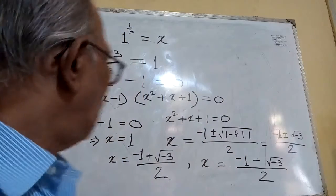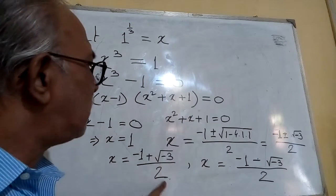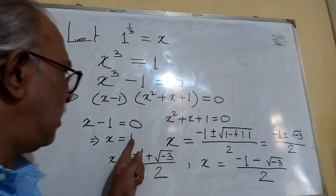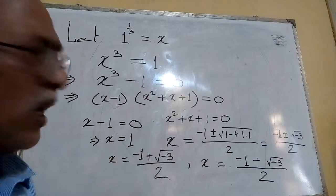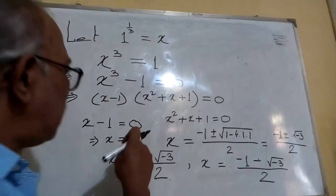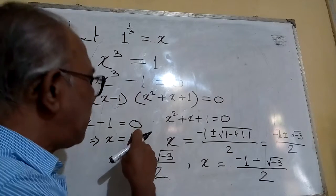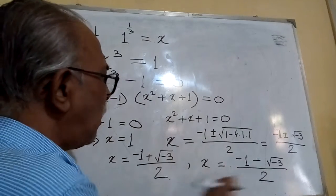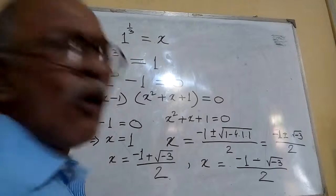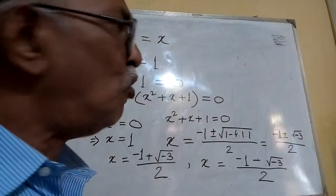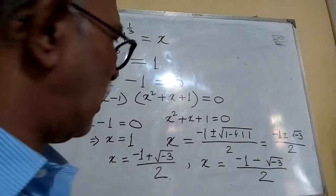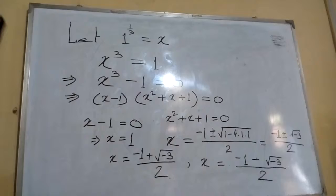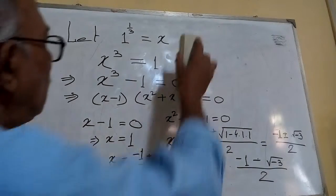These are actually the three cube roots of unity, or one. This is known as the arithmetical cube root, and these two are known as the complex cube roots of one. Now see one more interesting thing.